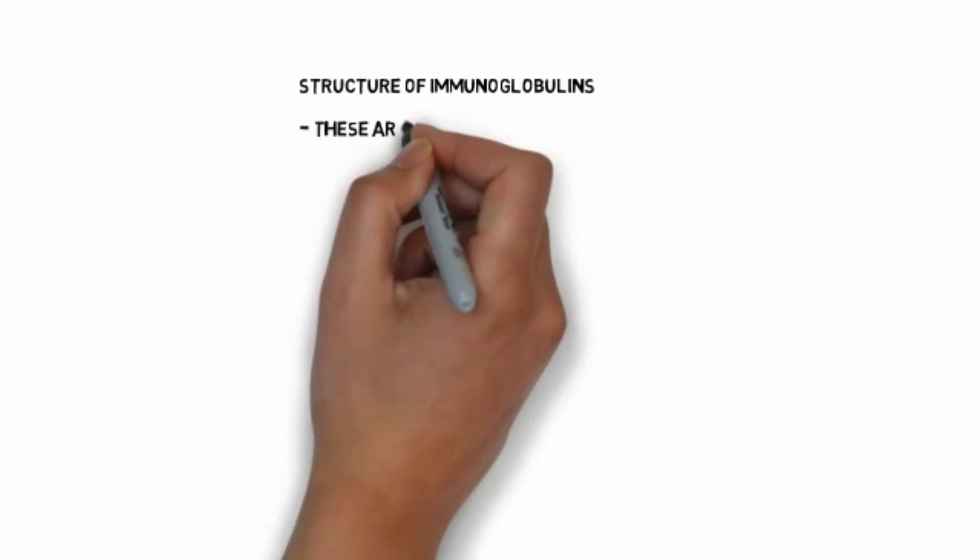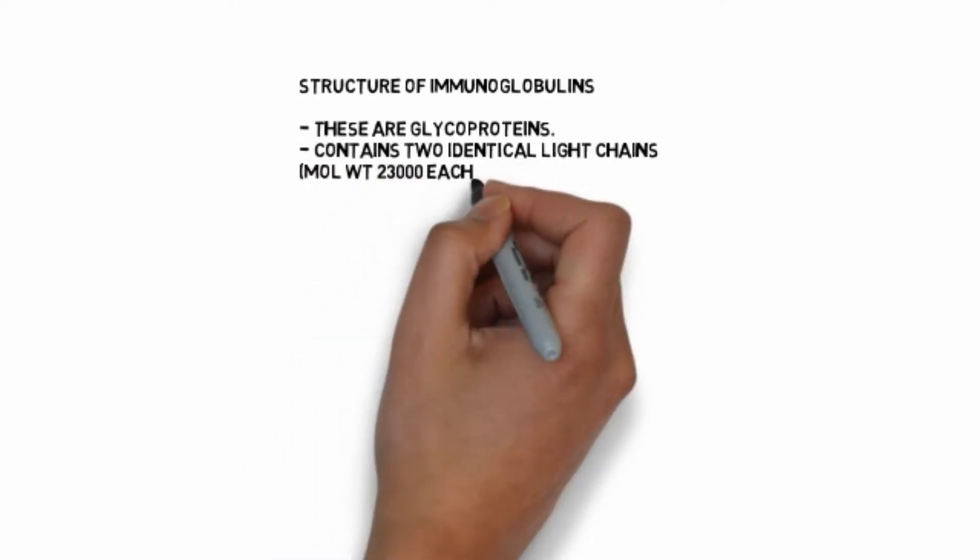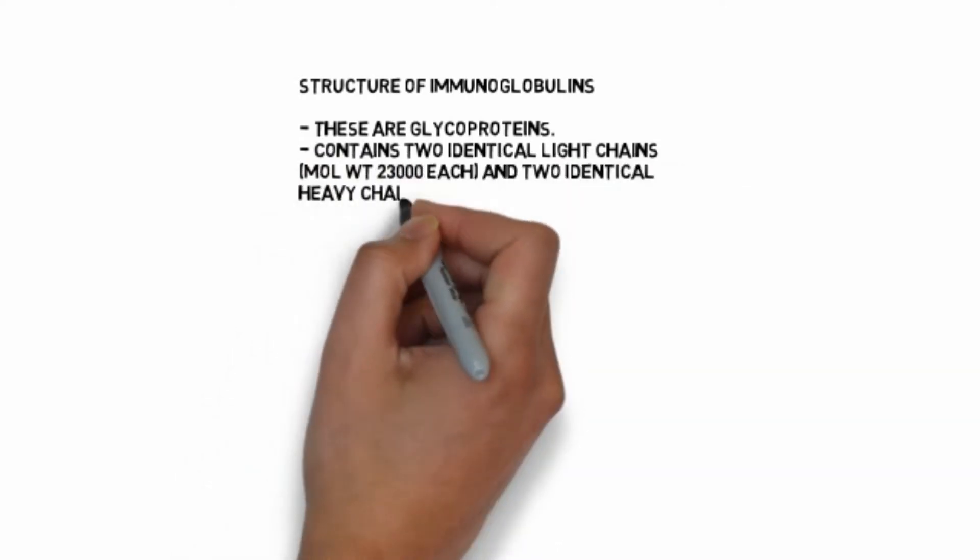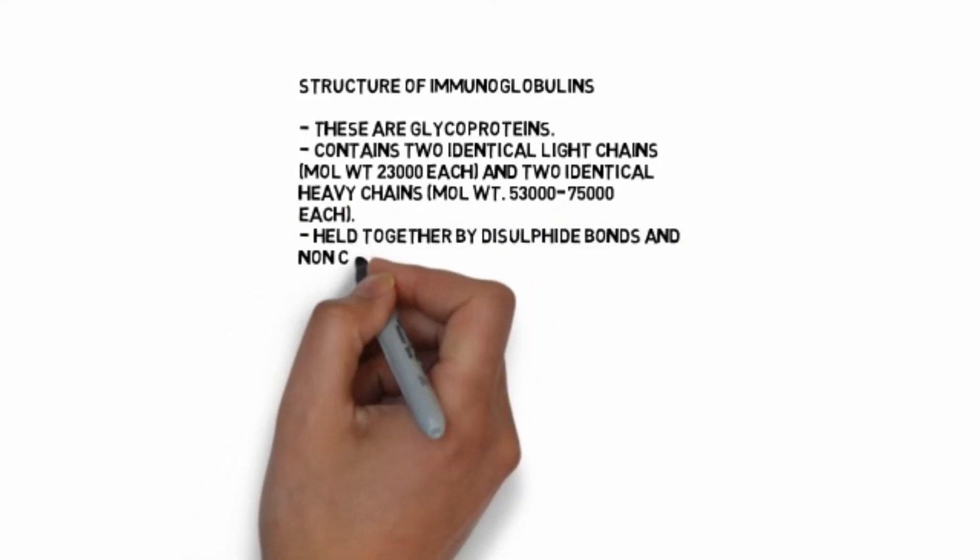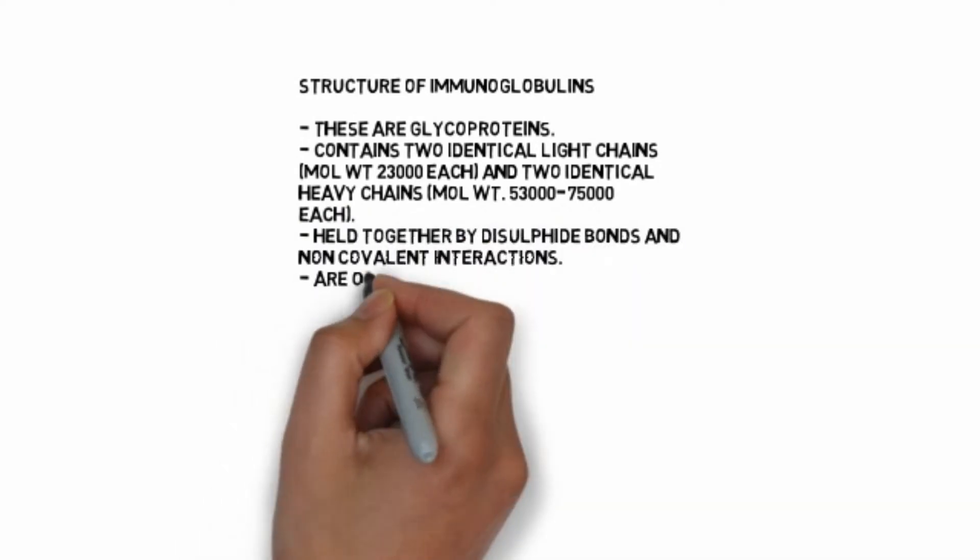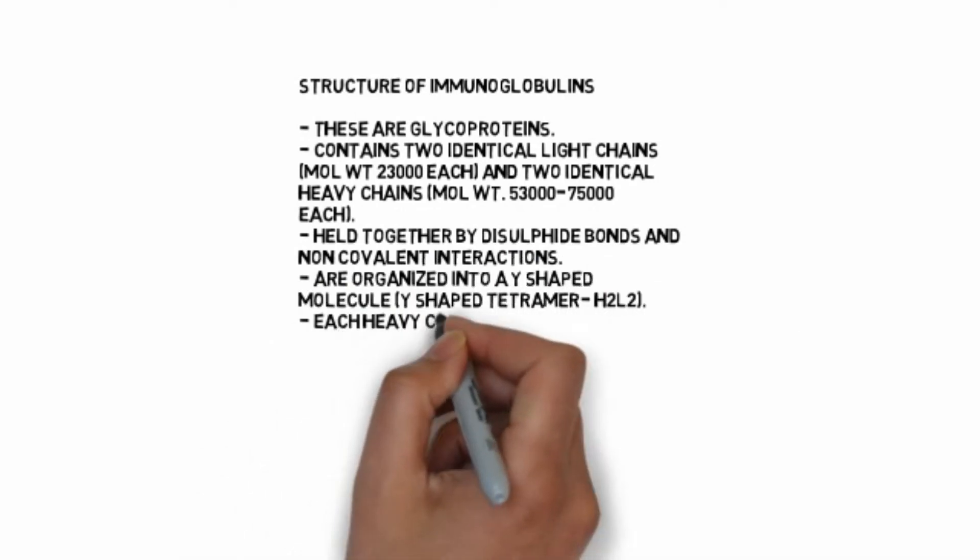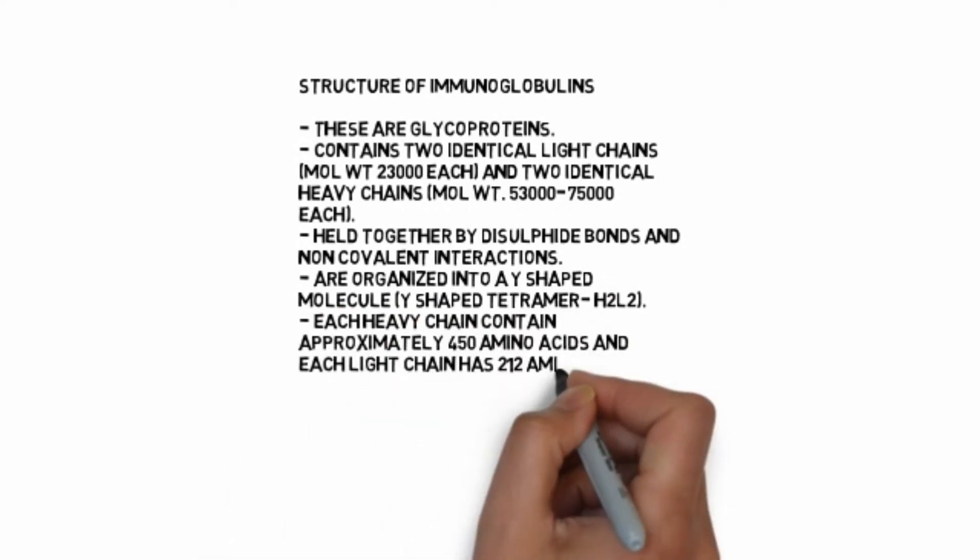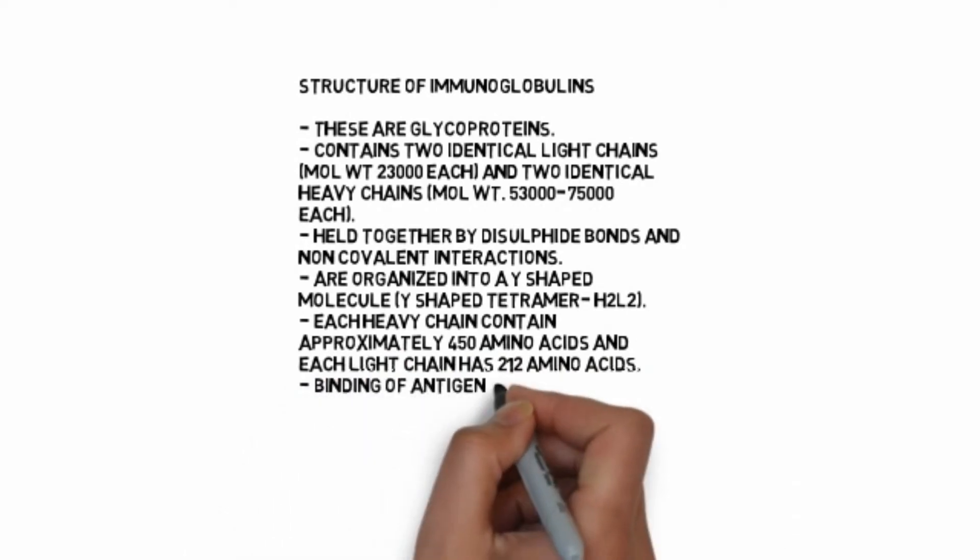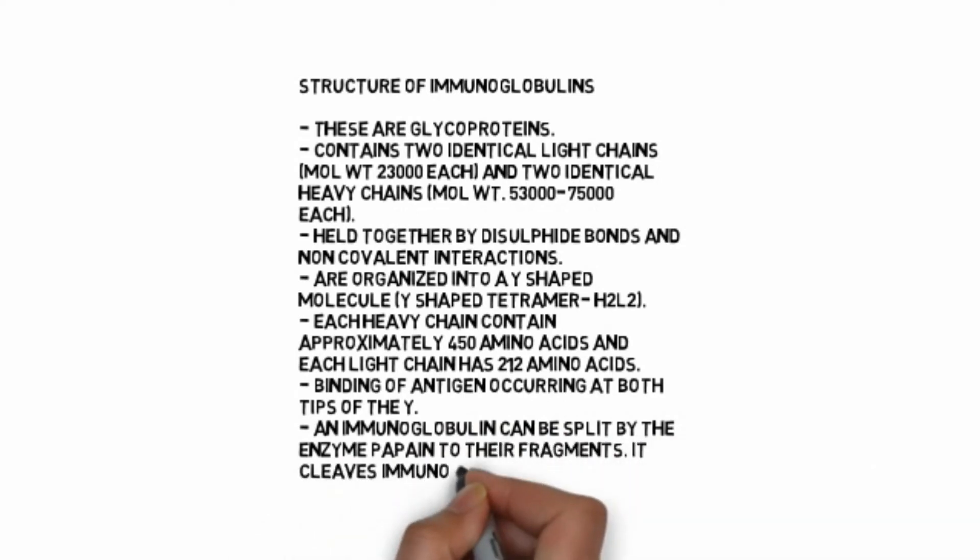Structure of immunoglobulin: these are glycoproteins containing two identical light chains, molecular weight 23,000 each, and two identical heavy chains, molecular weight 53,000 to 75,000 each. Held together by disulfide bonds and non-covalent interactions, organized into a Y-shaped molecule, Y-shaped tetramer H2L2. Each heavy chain contains approximately 450 amino acids and each light chain has 212 amino acids. Binding of antigen occurs at both tips of the Y.